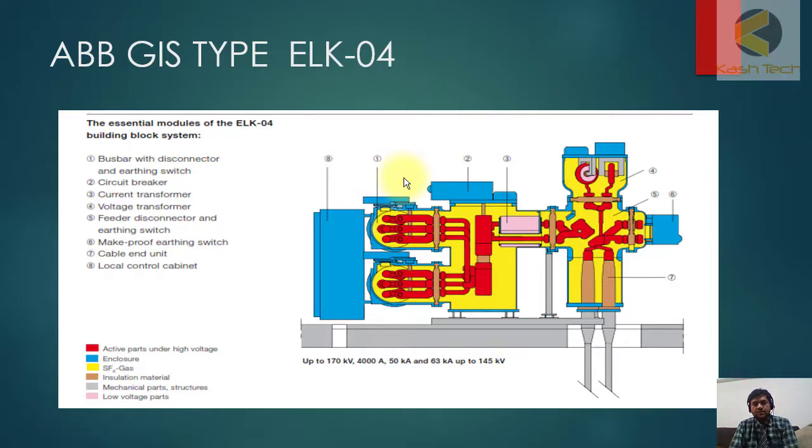For example, number one is the bus bar with disconnector and earth switch. This portion is the bus bar. Number two is a circuit breaker. This is the circuit breaker and here you can find the interrupter.